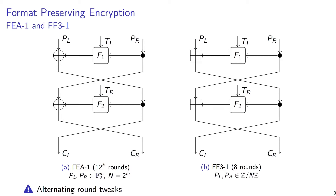Before describing these attacks, I need to go into the details of how these block ciphers are constructed. Both are Feistel ciphers. In the case of FEA1, it's a very classical Feistel cipher where both branches are m-bit and the branches are added using exclusive OR. In the case of FF3, this addition is an addition modulo an integer n.